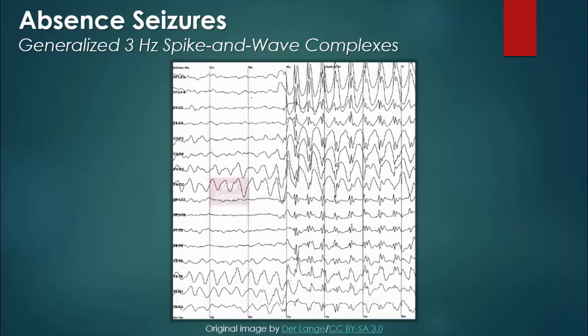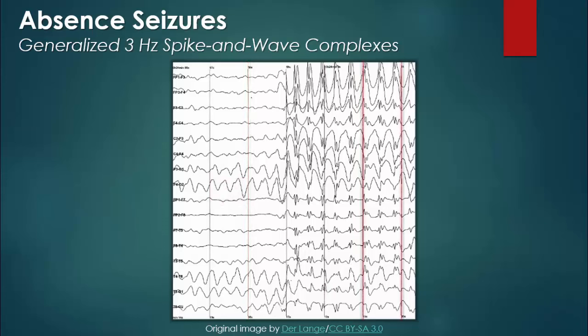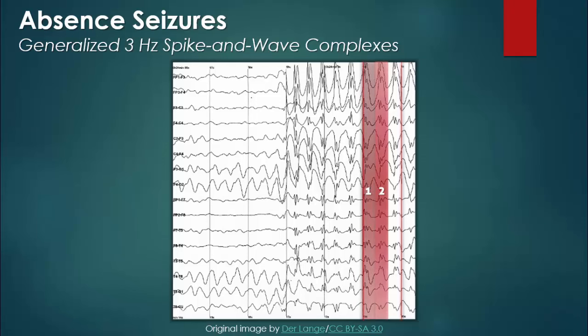Lastly, we need to determine the frequency of the complexes. As you may be aware, the vertical bars are separated by a duration of one second. Counting the number of spike-wave complexes that occur between the two bars, we find that approximately three occur per second.